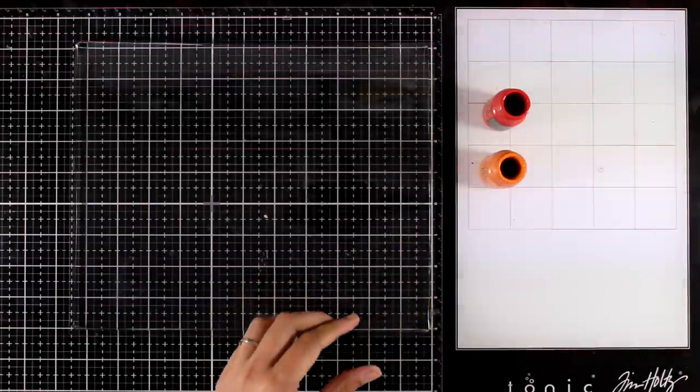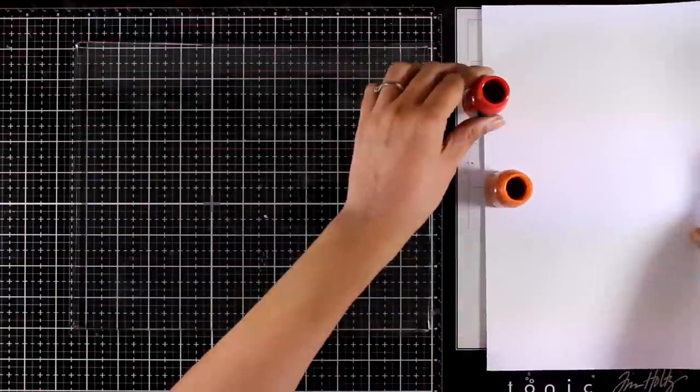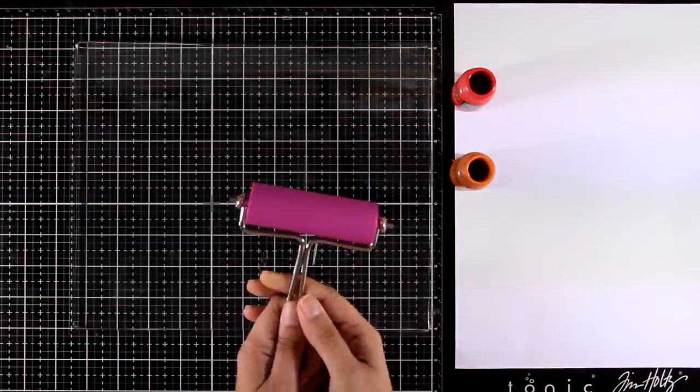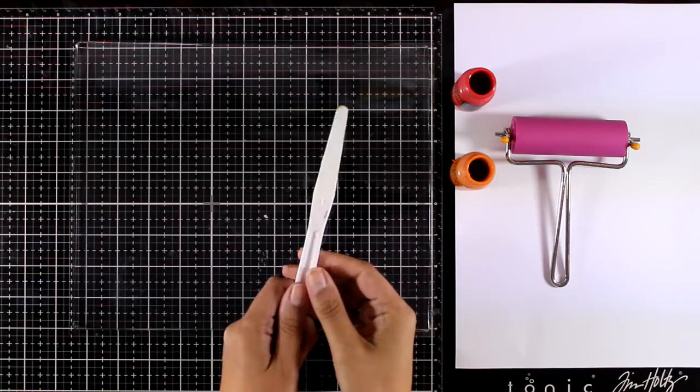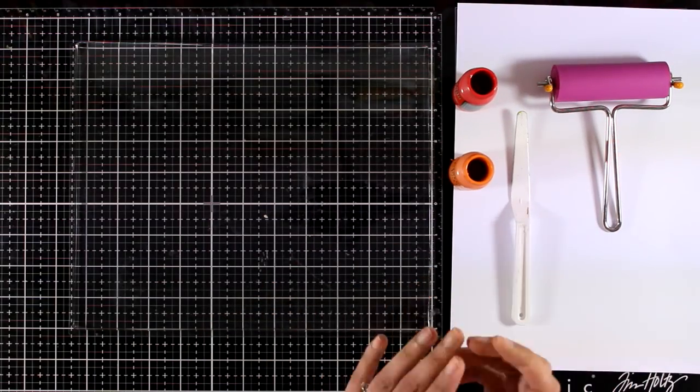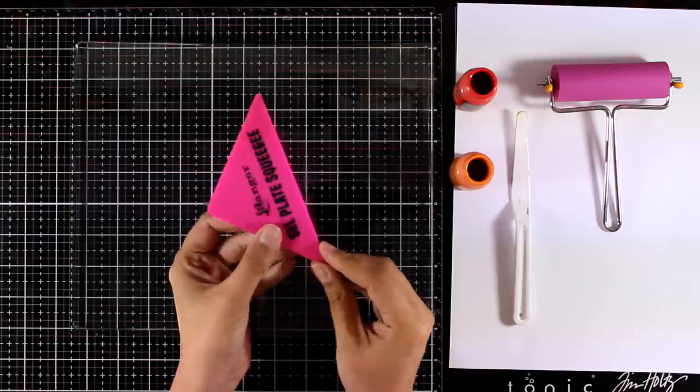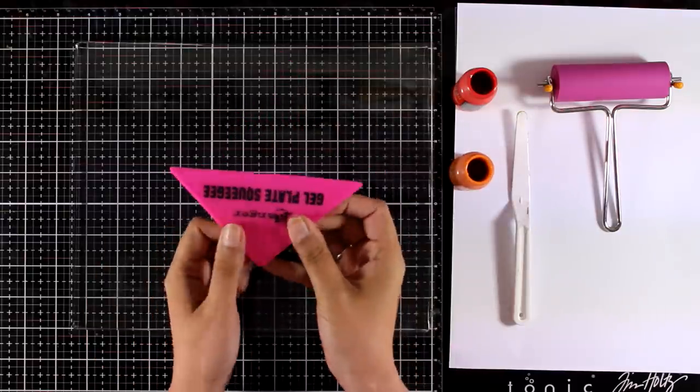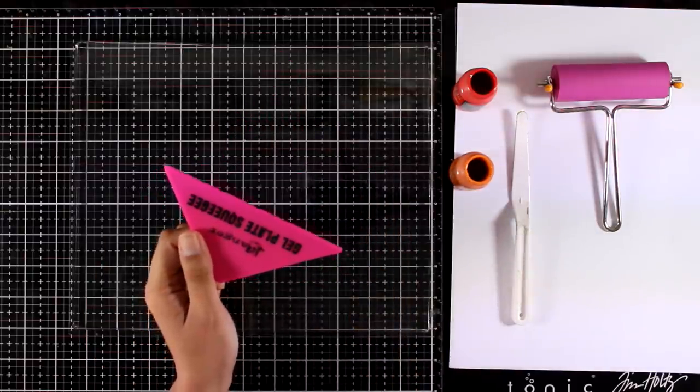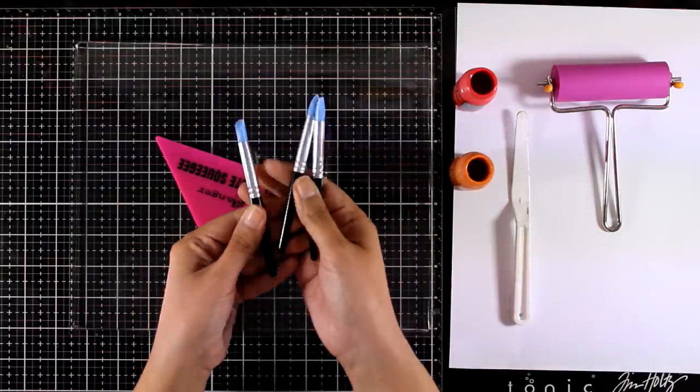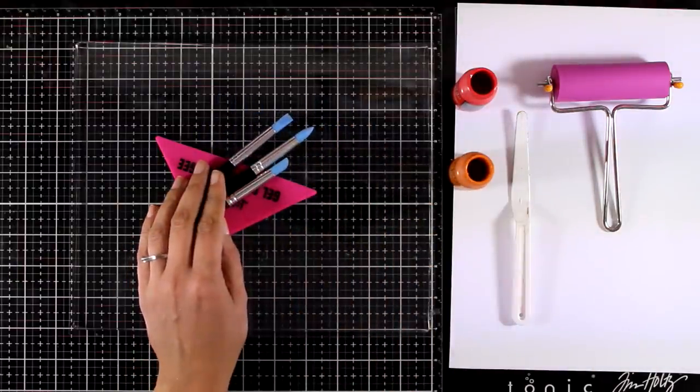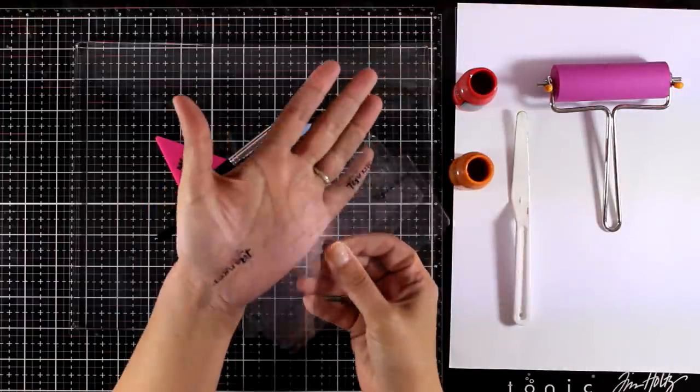For this you can use any type of acrylic paint that you have. You will see that I switched from one acrylic brand to another just to show you that it really doesn't matter. You're also going to need a brayer. Now you can use different tools to get some texture before you pull a print or you can apply your paint with a spatula.